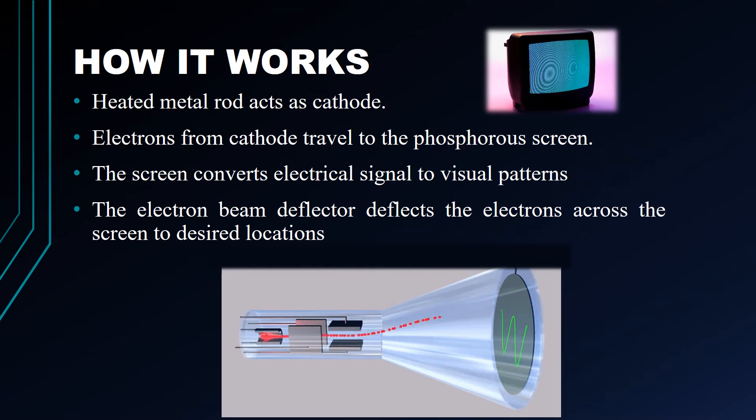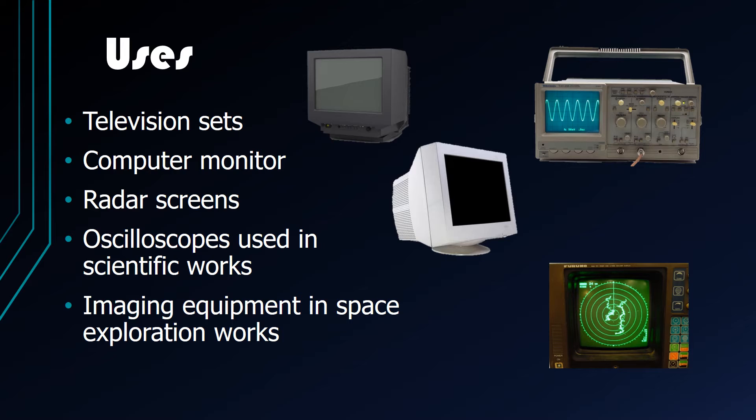The second important part of the CRT is the phosphorous screen. The function of the fluorescent screen is to convert electrical signals into visual patterns. The third important part of the CRT is the deflecting system. The function of the deflector system is to deflect the electron beam horizontally or vertically; therefore, it is also known as the electron beam deflector.